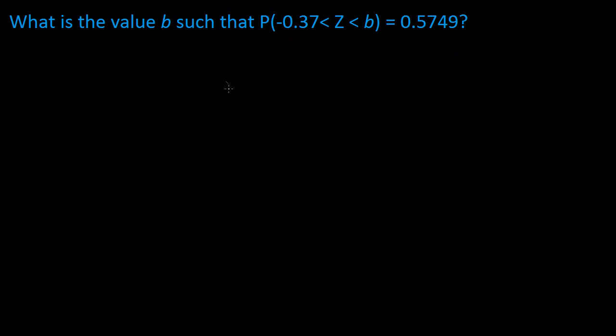So we're going to be rearranging it to probability of Z being less than B, subtract the probability of Z being less than negative 0.37. And this is going to be equal to 0.5749.